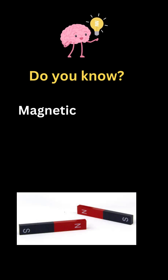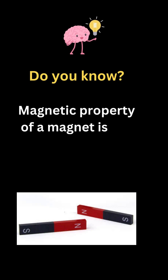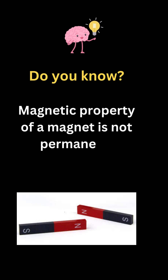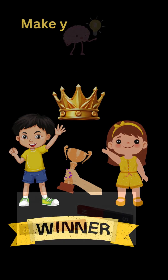Though it is a permanent magnet, its magnetic property is not truly permanent. It disappears with time — perhaps decades, centuries, or even millions of years.